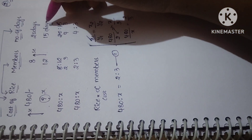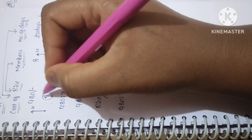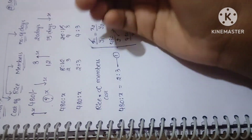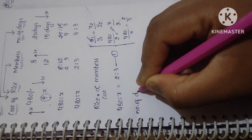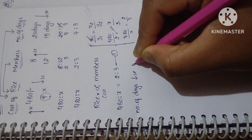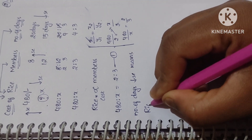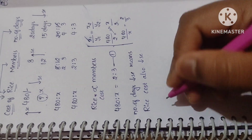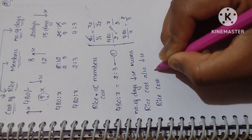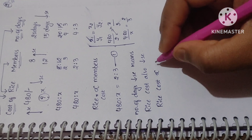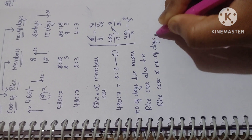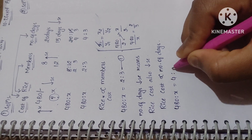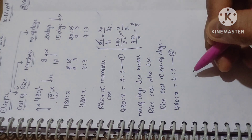Now compare cost of rice with number of days. Days decreases from 20 to 15. Fewer days means less rice is needed, so cost of rice also decreases. Both quantities decrease together, so this is also direct proportion. Rice cost is directly proportional to number of days. We write: 480 is to x equals 4 is to 3. Take this as equation 2.